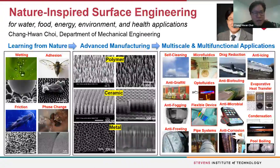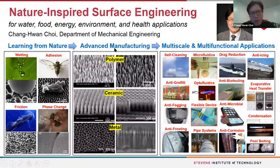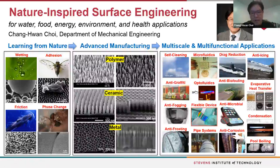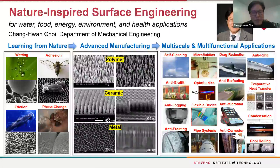I was interested in understanding how those microstructures, nanostructures, or surface chemistry combined with structures could affect those behaviors. Eventually, I wanted to create similar structures by using advanced fabrication or manufacturing technologies, including polymers, ceramics, and metals, and demonstrate those features for real civil, mechanical, energy, biomedical applications. Today I'll briefly go over those three main aspects of my research portfolio.